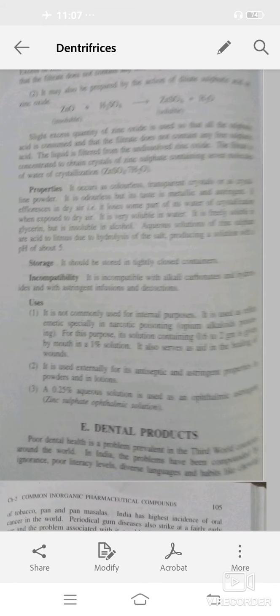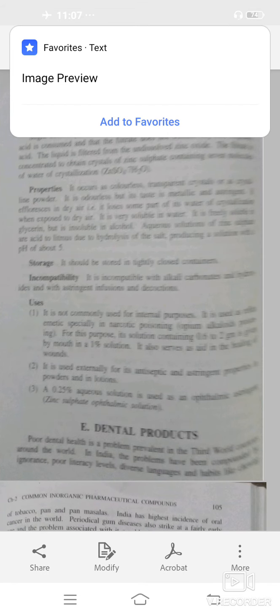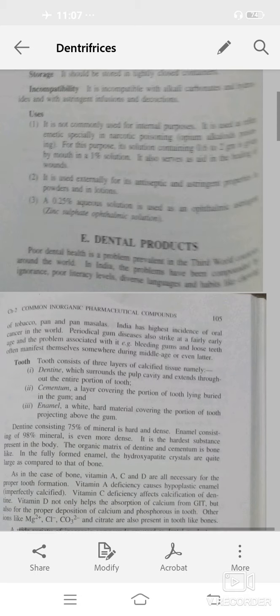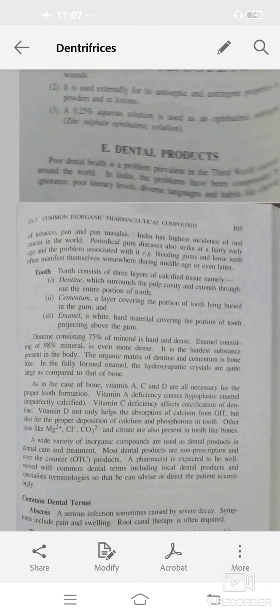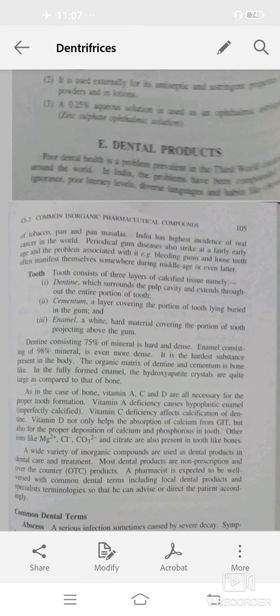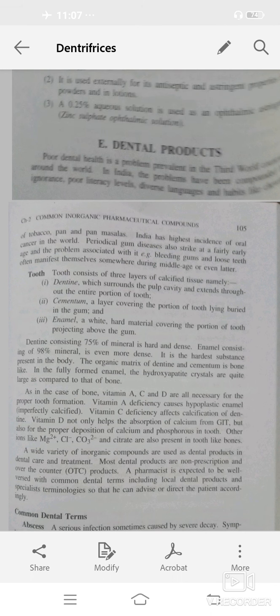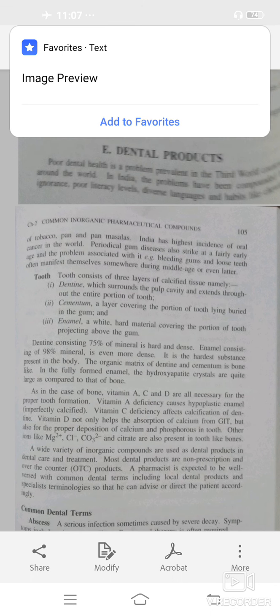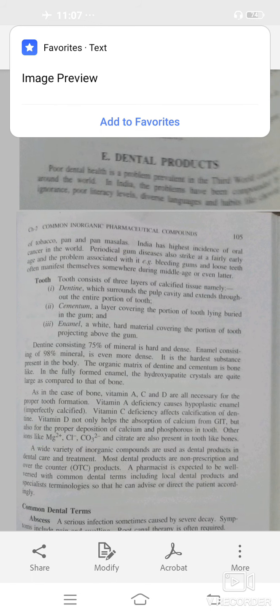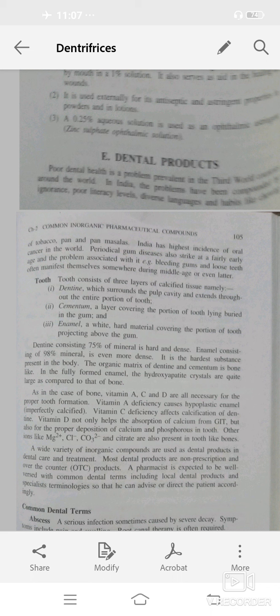Good morning students, today we will discuss dental products which are particularly used for tooth disorders. The tooth consists of three layers: dentin, cementum, and enamel. Dentin surrounds the pulp cavities or entire portion of the tooth. Cementum is the central part or layer covering the portion of tooth lying in the gum.